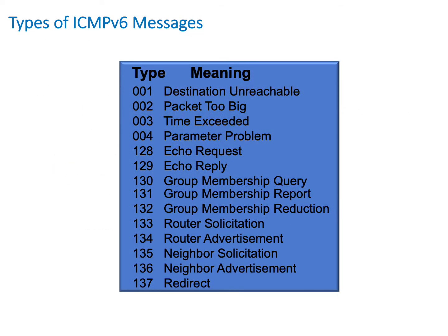Let's take a look at some of the different types of ICMPv6 messages. Some of them are quite obvious such as destination unreachable, an echo request, and an echo reply. The ones we're interested in though are neighbor solicitation and neighbor advertisement — those are type 135 and 136. Let's take a look and see how those are used.